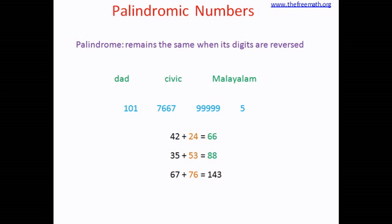In that case what you can do is you flip the sum, that means you reverse 143. So you will get 341, and now add these two numbers, that means add 143 and 341. So you get 484 and 484 is a palindrome.